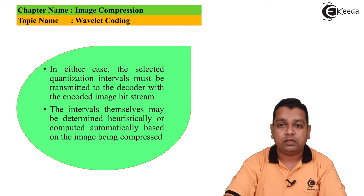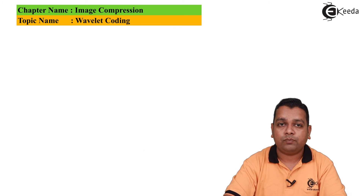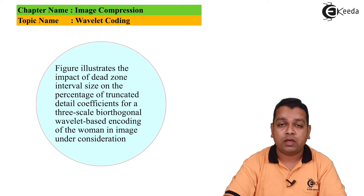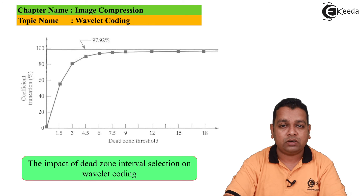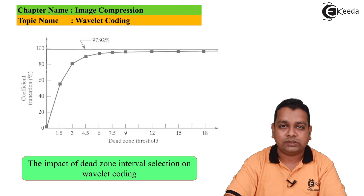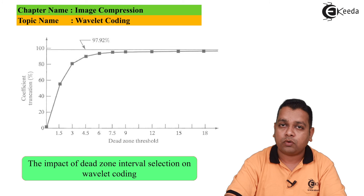The quantization intervals may be determined heuristically or computed automatically based on the image being compressed. An example figure illustrates the impact of dead zone interval size on the percentage of truncated detail coefficients for a three-scale biorthogonal Wavelet-based encoding of a woman image. The graph has the dead zone threshold on the horizontal axis and coefficient truncation percentage from 0% to 100% on the vertical axis. A particular marking of 97.92%, approximated to 98%, is shown corresponding to specific threshold values.